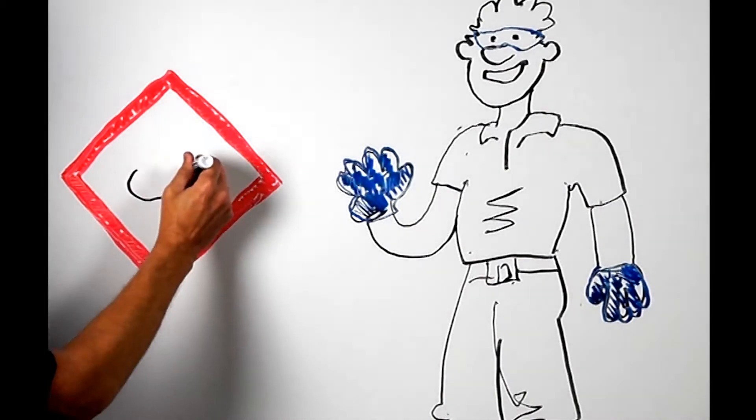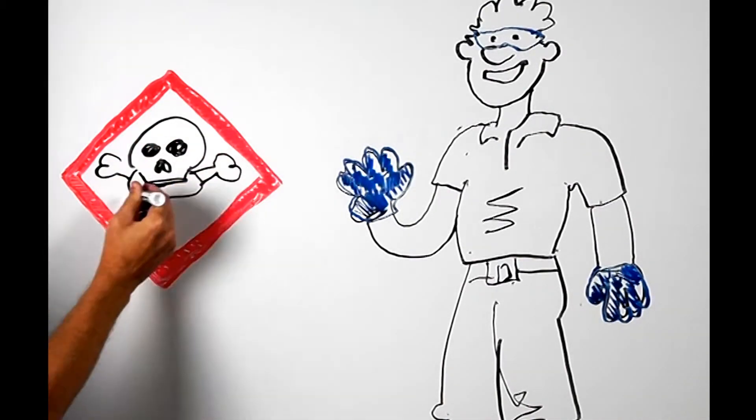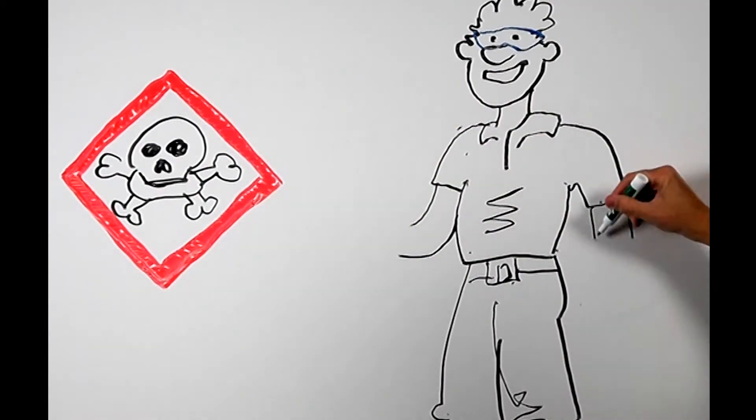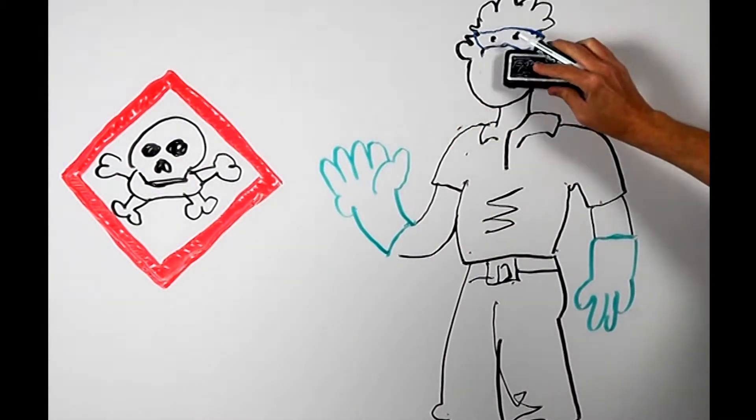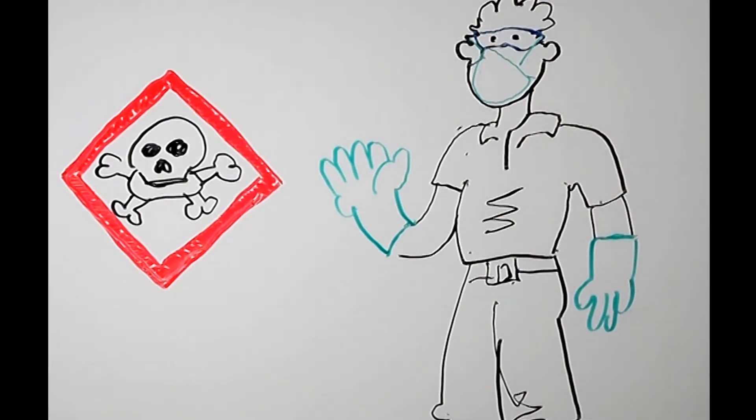The skull and crossbones mean it has acute toxicity. In other words, it could hurt you fairly quickly if exposure is high enough. Make sure you're wearing enough PPE to keep it from getting into your mouth, lungs, or skin, like heavy gloves or a mask.